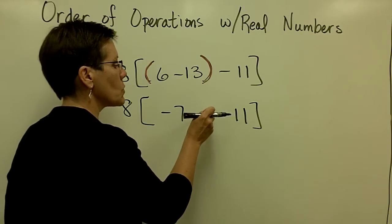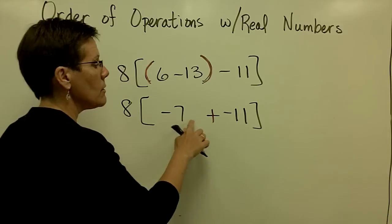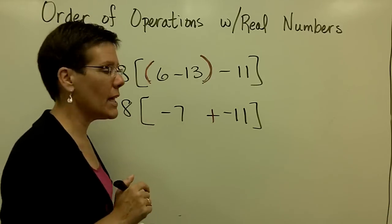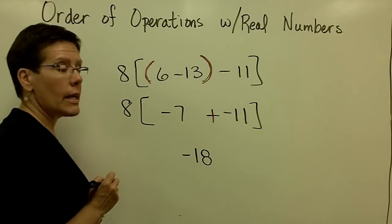I'd like to go ahead and do what's in the square brackets next, because we keep doing what's in the parentheses. And a negative number plus a negative number, they have like signs, so I add their absolute value. That's 18. I give that answer the negative sign.